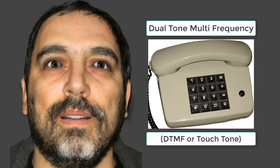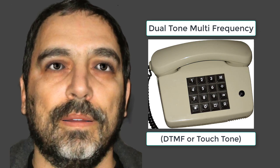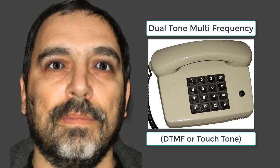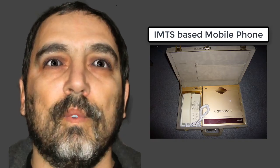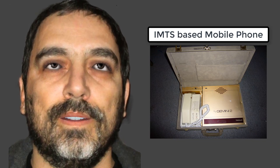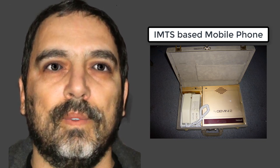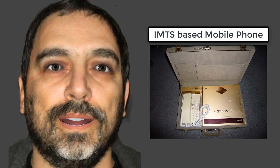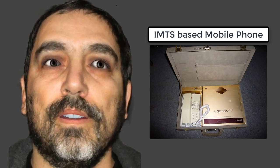In 1965, the improved mobile telephone service, IMTS, went into operation as a pre-cellular VHF radio system which linked to the PSTN. It replaced the mobile telephone service, MTS, offering direct dial rather than connections through a live operator.